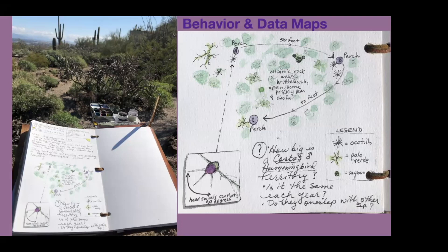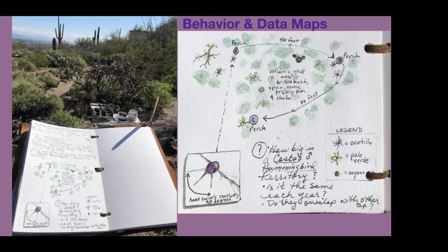It made me ask some questions — I really didn't know how big a Costa's hummingbird territory is. I need to look that up. Here's another fun one: this is my backyard. I observed a baby bunny do what I call its spaz-out thing — it was just sitting there, then took off, ran around the ironwood tree, across the yard, around another planting area, stopped, then zig-zagged, boinged straight up in the air, came down in a new direction, made a U-turn, zagged, and then sat there grooming like nothing had happened. I could have written that down, but it was more interesting and fun to map it.